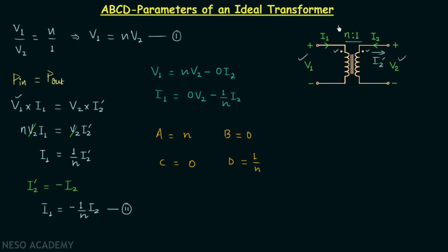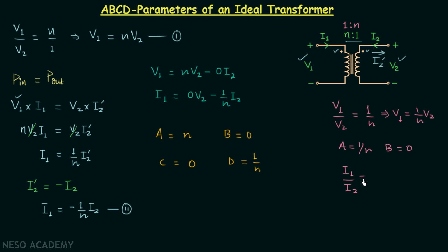Now, what if we change the turns ratio to 1 to N? In this scenario, V1 over V2 = 1/N, which implies V1 = (1/N)·V2, so parameter A = 1/N and B = 0. The current ratio I1/I2 = −N, giving I1 = −N·I2, so parameter C = 0 and parameter D = N. Notice how parameters A and D are affected when we change the turns ratio to 1 to N.